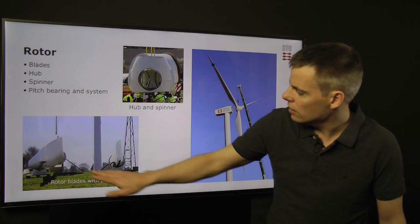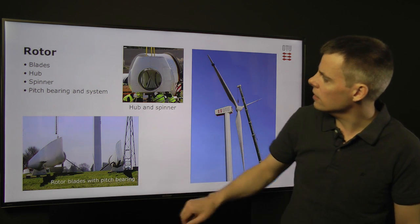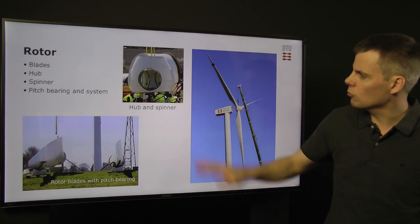In this case, for these blades, the pitch bearing, the bearing which turns the blades about their lengthwise axis, is part of the blade and not of the hub. Typically, it would be part of the hub.